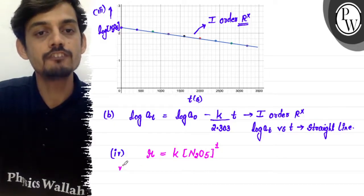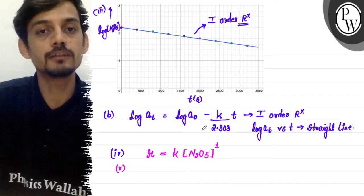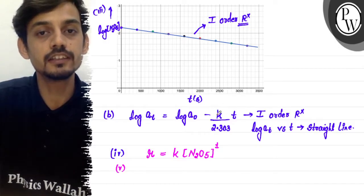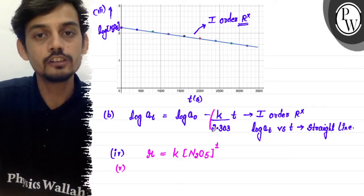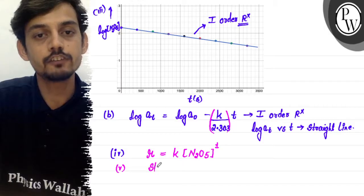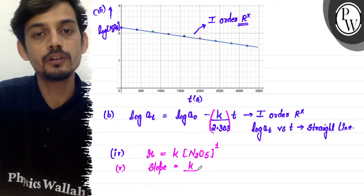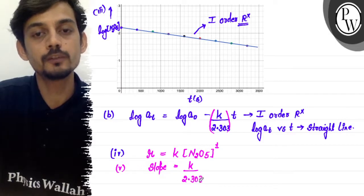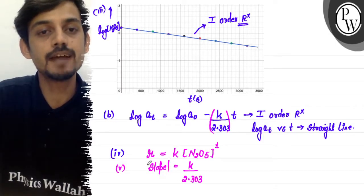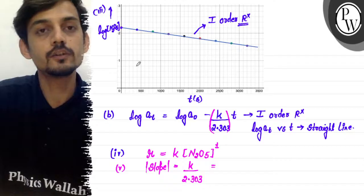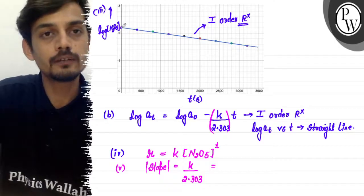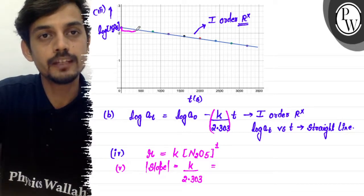For the fifth part, we calculate the rate constant. The slope is equal to −k/2.303. We can take the magnitude of the slope using two points from the log concentration versus time graph to calculate k. The rate constant k is approximately 0.00046 per second.